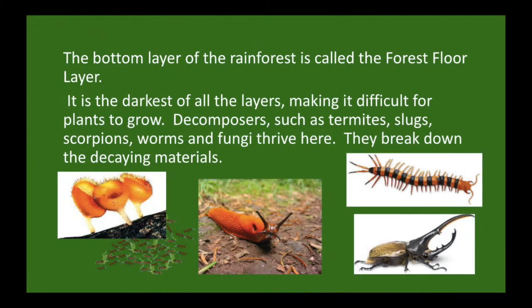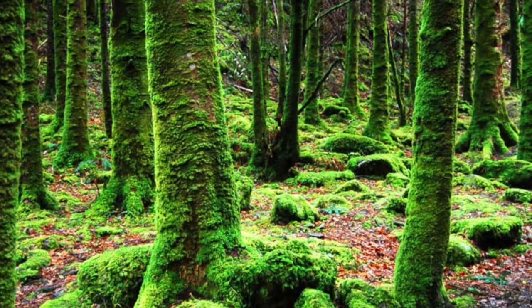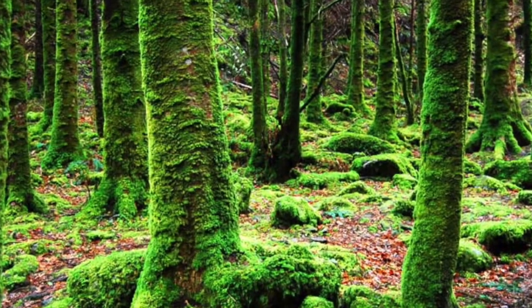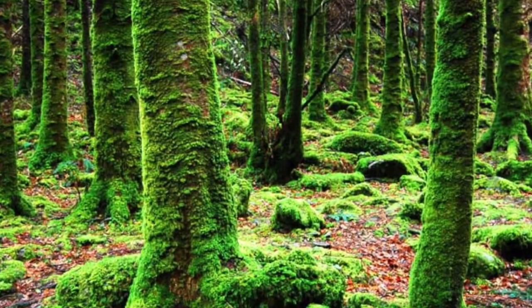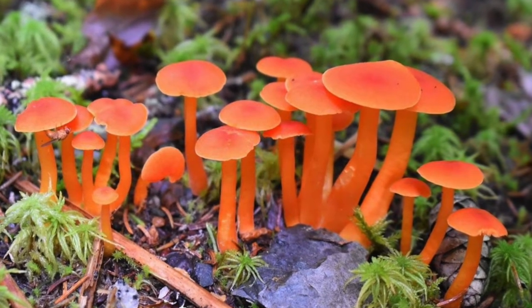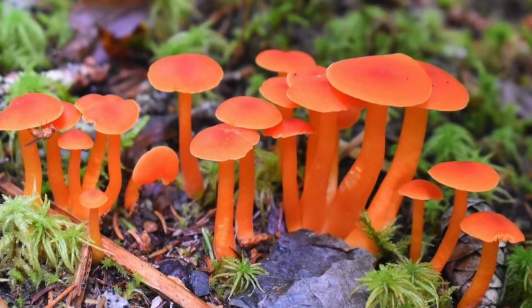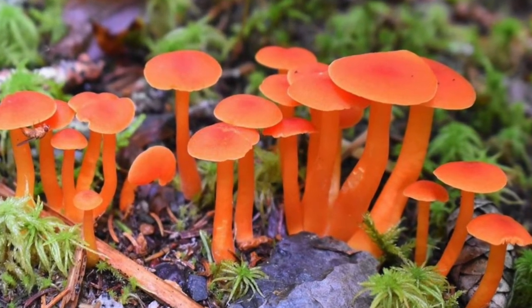The bottom layer of the rainforest is called the forest floor layer. It is the darkest of all the layers, making it difficult for plants to grow. Decomposers such as termites, slugs, scorpions, worms, and fungi thrive here. They break down the decaying matter.